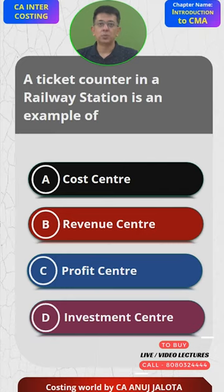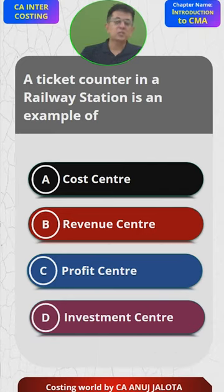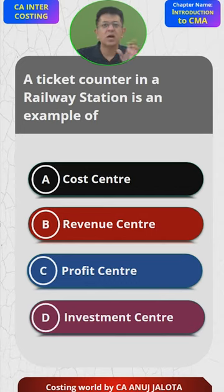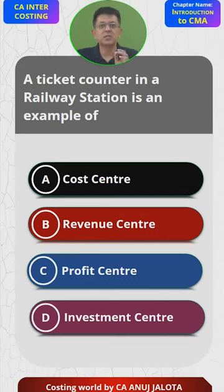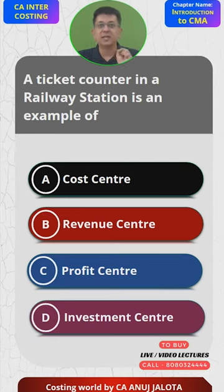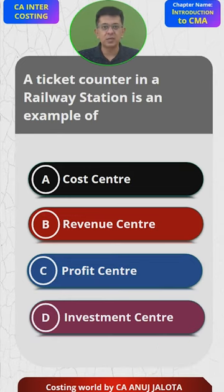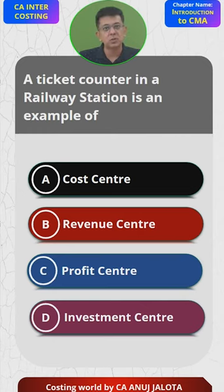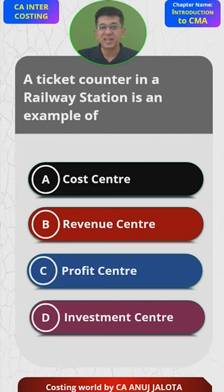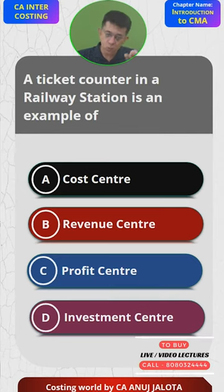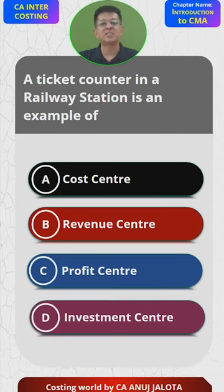In cost centers, we accumulate costs. Revenue centers are only responsible for collecting revenue. Profit centers are those departments which sell and produce both, thereby giving you profit. Investment centers are those which produce, sell, and also employ fixed assets.